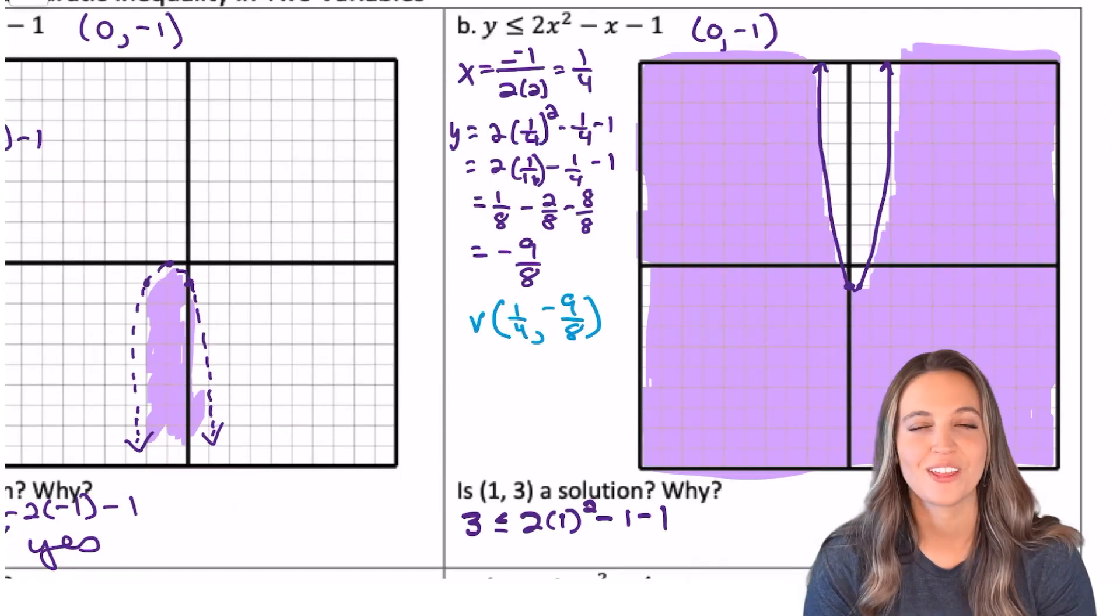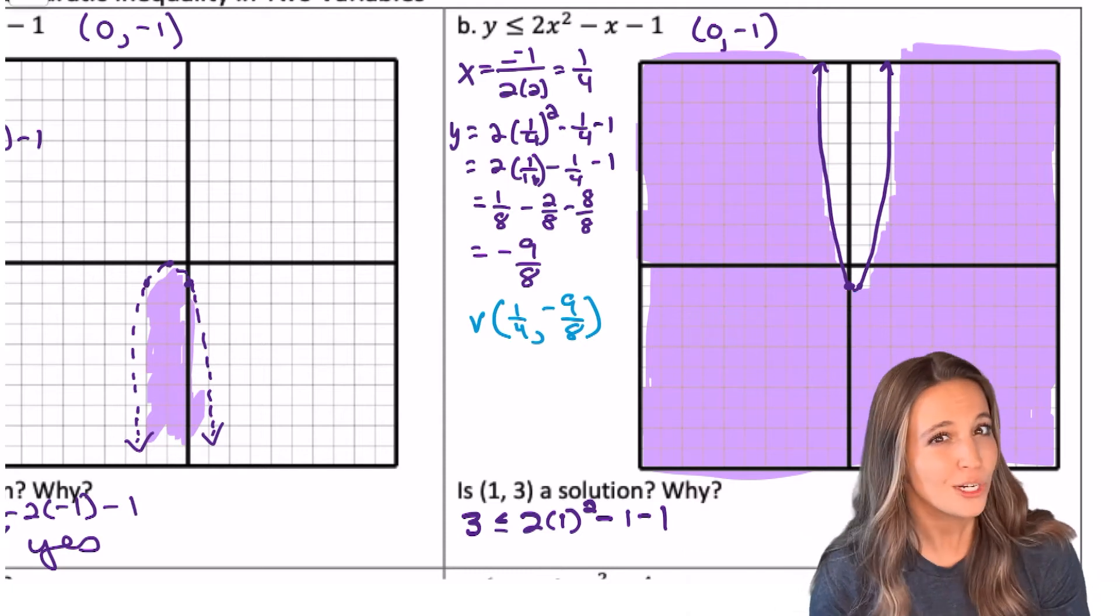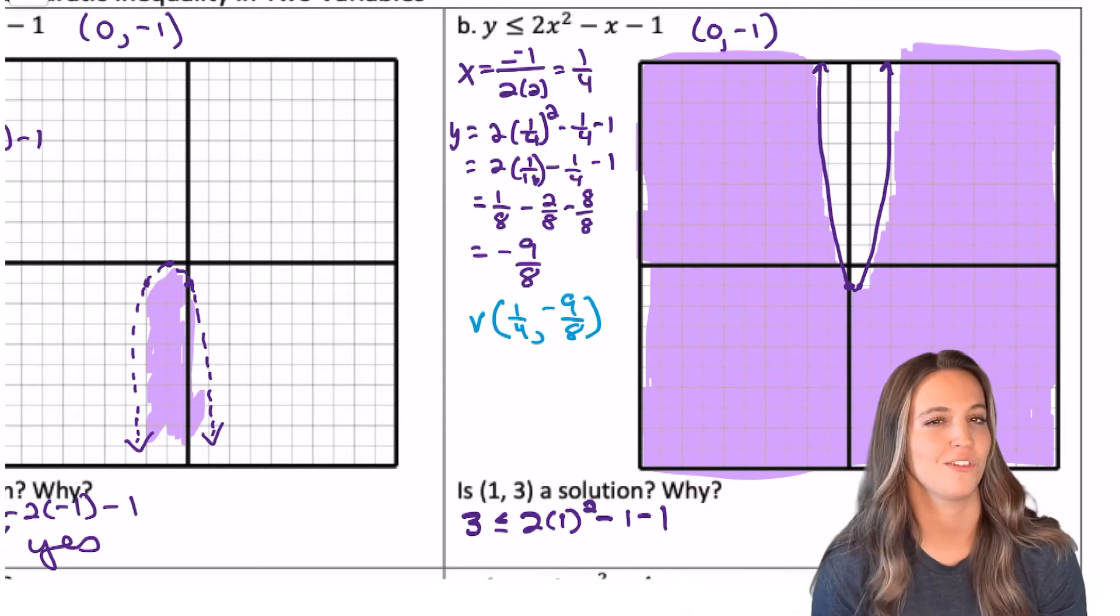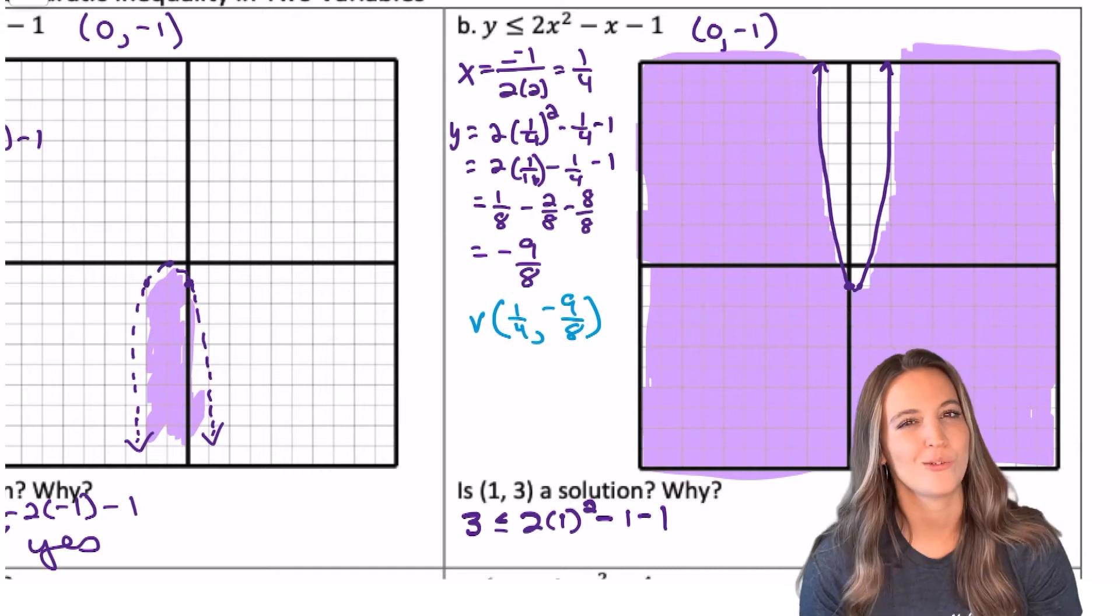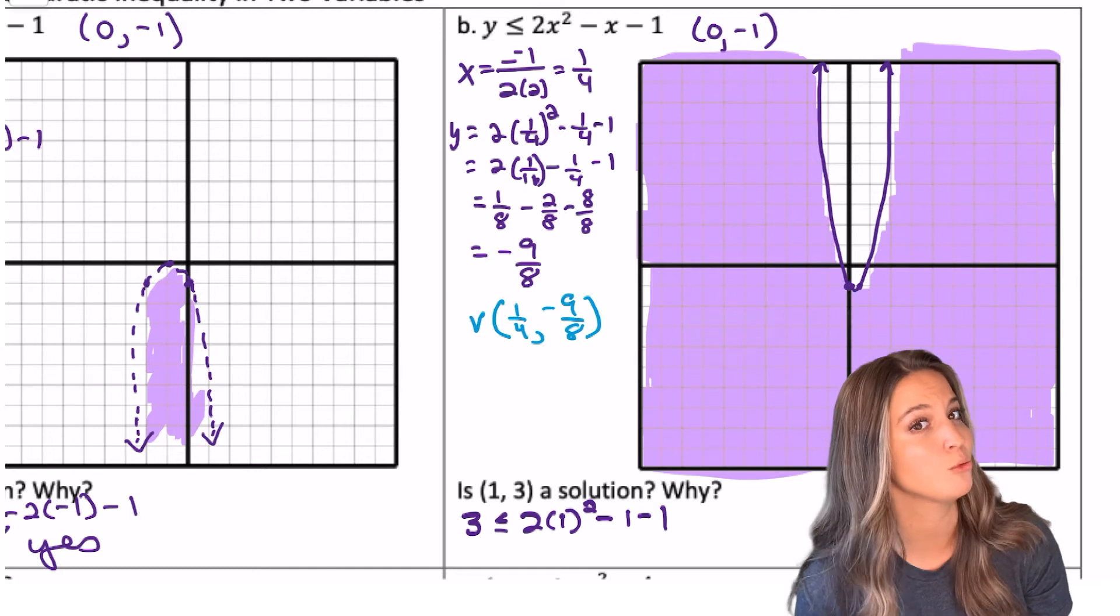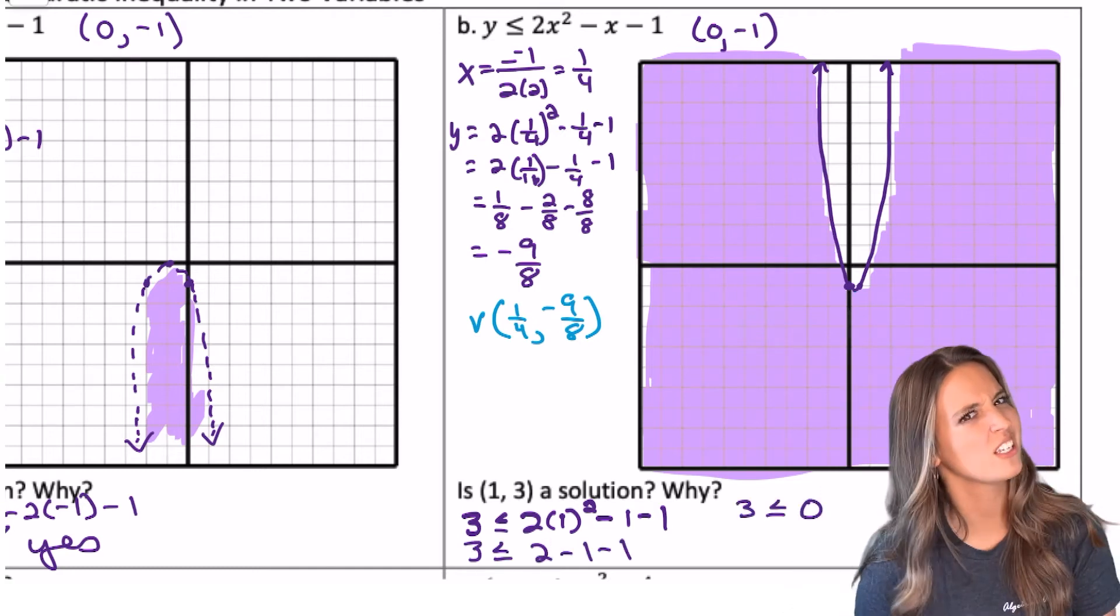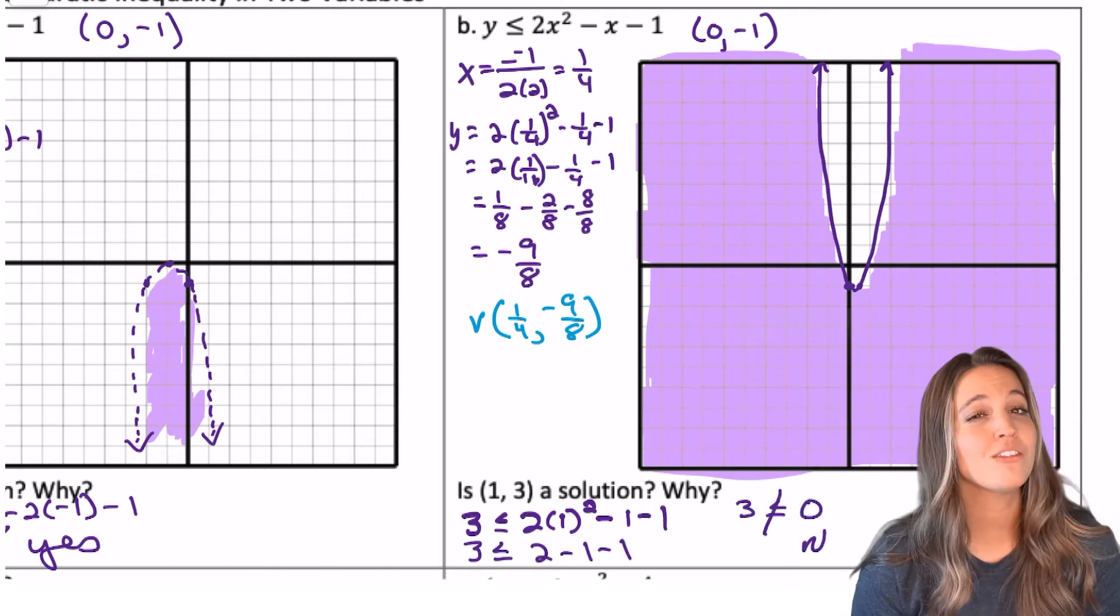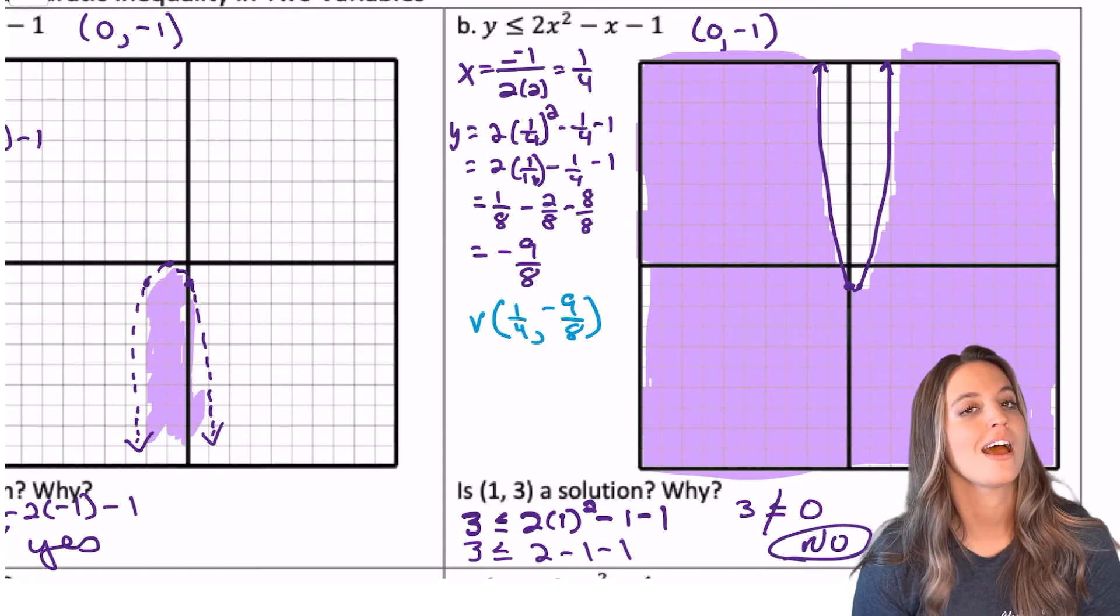The vertex was 1.4, negative 9.8. That made it pretty tricky to reflect the y-intercept over the axis of symmetry. Is 1, 3 a solution? Doesn't appear so graphically, but let's check algebraically. 3 less than or equal to 0? No! So 1, 3 is not a solution to this inequality.